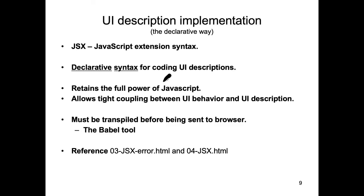Svelte also has a declarative programming style. So how do we implement user interfaces following a declarative approach? The answer is JSX. JSX wasn't actually created by the React team — it existed as a separate library, but they adopted it, and since then a number of other frameworks use it as well. JSX allows us to implement user interface descriptions in a declarative programming style, and what's nice is we still have the full power of JavaScript available when coding our UI descriptions. This JSX syntax allows us to couple our UI description with our UI behavior.